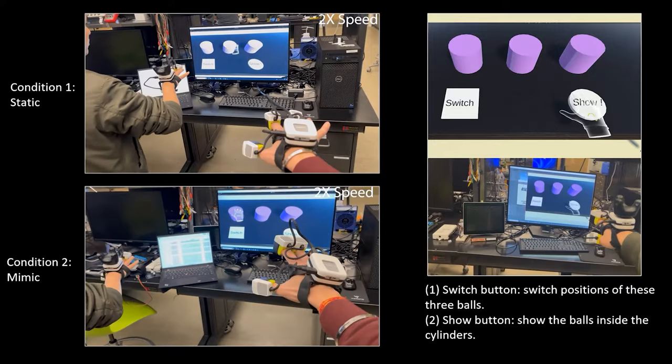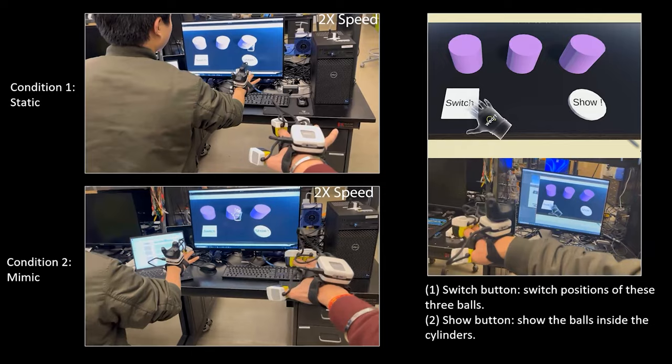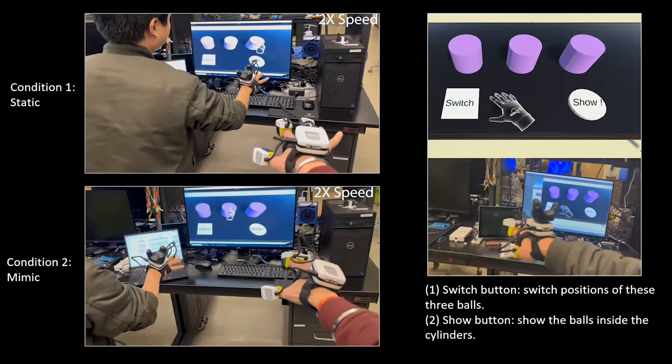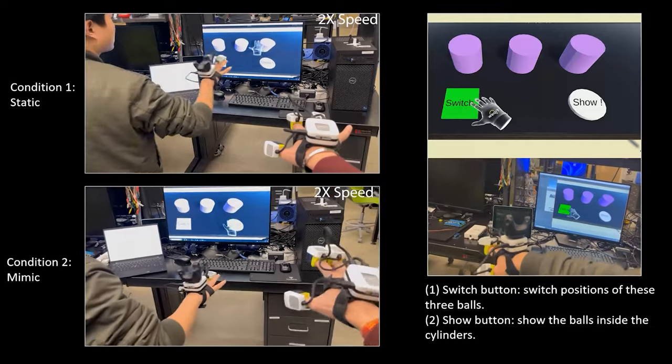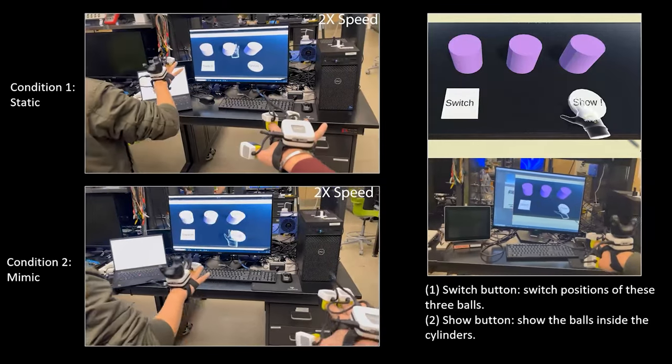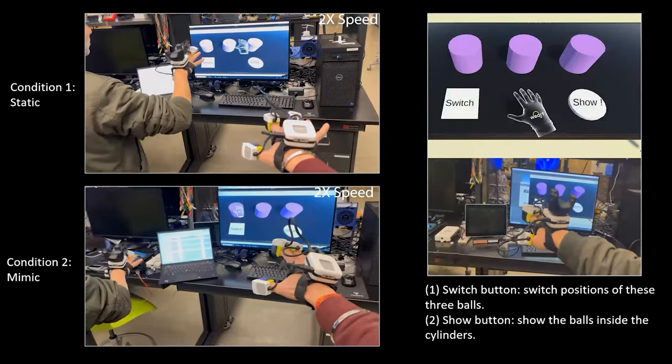To explore this, we set two conditions: one where the passive touch hand remains stationary, and another where participants mimic active movements to receive proprioceptive feedback. Two buttons are included for multiple trials, helping us study the impact on size perception.